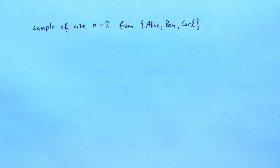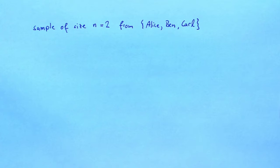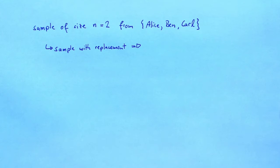For this example, we are going to consider a population consisting of three individuals: Alice, Ben, and Carr. The typical populations that we consider as econometricians are much larger than just three individuals, but for this example we want to keep things really easy. We are going to sample with replacement. That means there are three to the power of two, or nine, possible samples that we can draw.